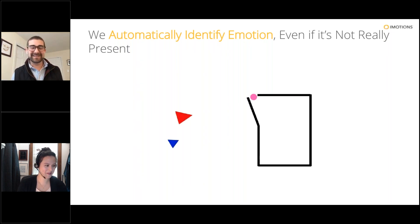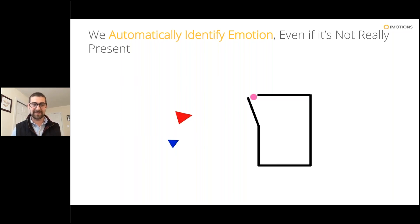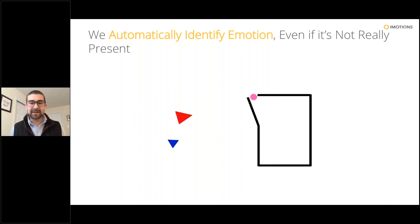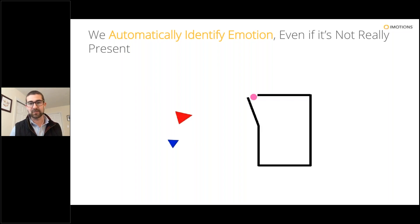You can do this with really any number of different people and you'll get lots of different stories about what these different characters are doing, what their motivations are, what they're trying to accomplish. Some folks will think the blue triangle and the pink circle are bullying the red triangle, and you come up with these very rich emotional stories — which make absolutely no sense, because these are literally three amorphous shapes moving around on a screen. They do not have any motivation, intent, or goals. And yet this is a very natural process for us to assign emotional value to what we're seeing.